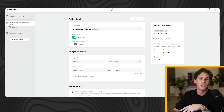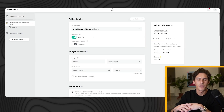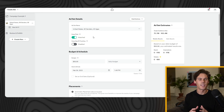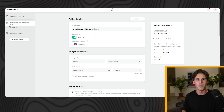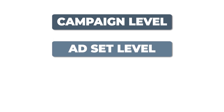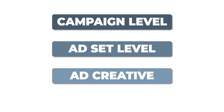Now we're on the ad set level, and below that is the ad creative level. There are three levels to every single campaign on every paid platform: the campaign level, which I just showed you; the ad set level, which is mainly targeting and demographics; and the ad creative level, where you put in your video or image creative along with text and headlines.